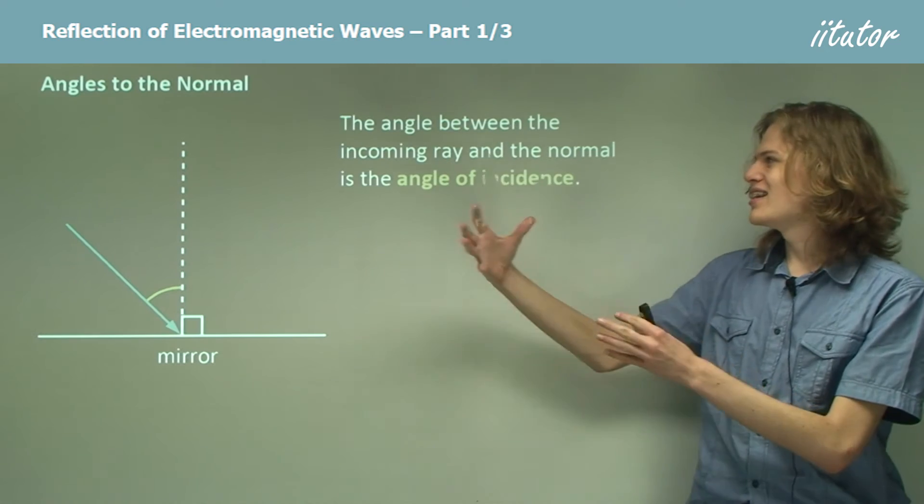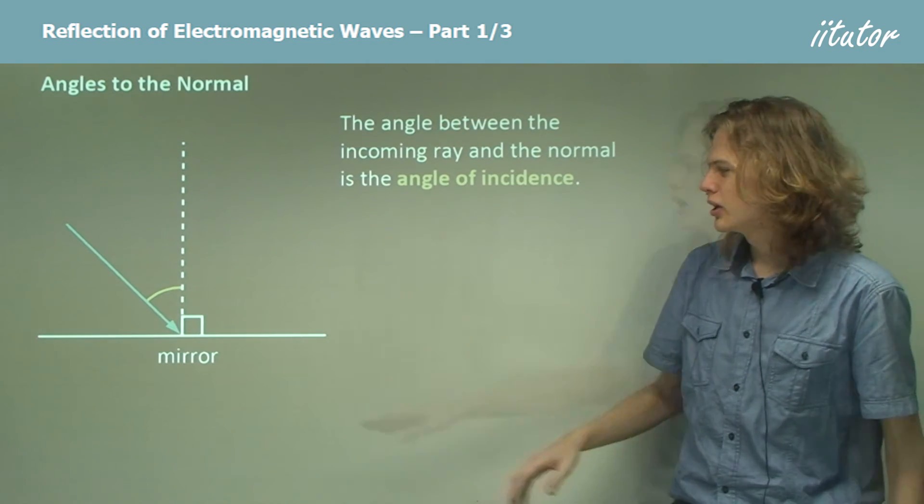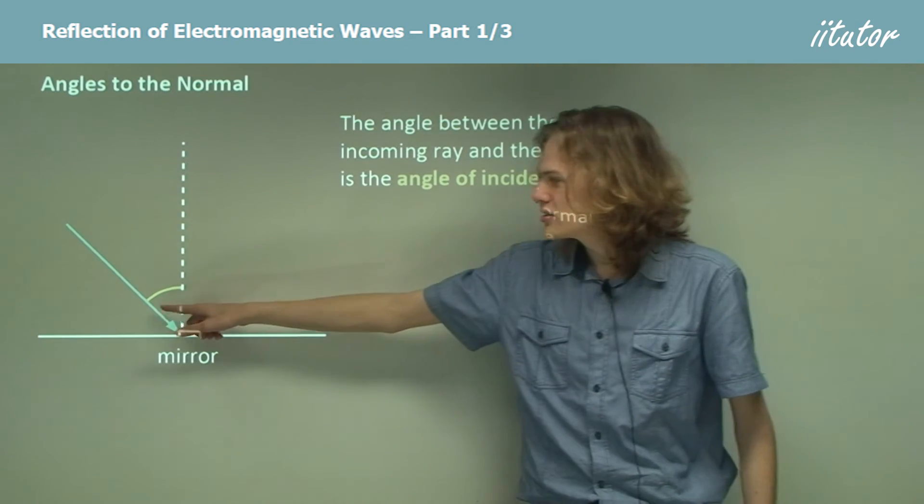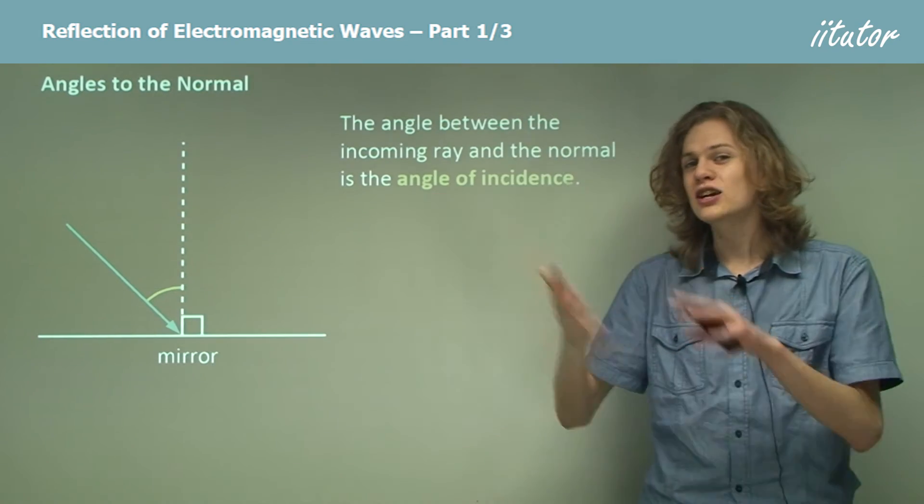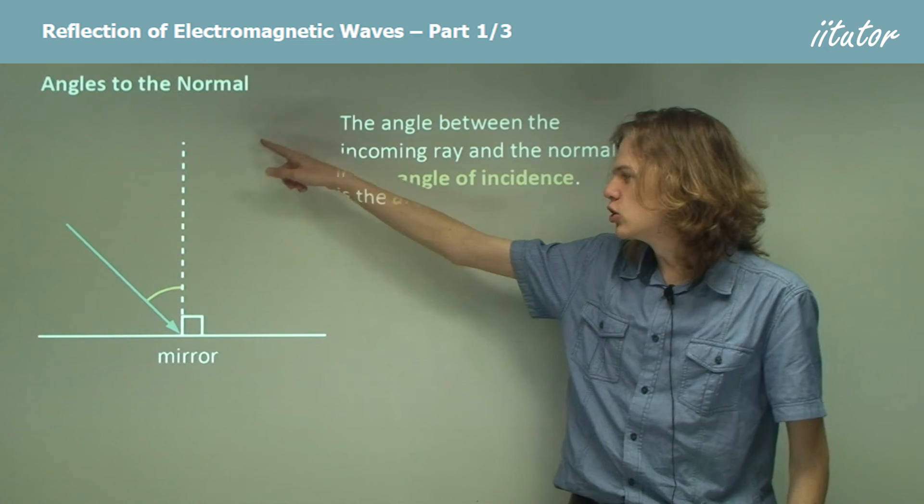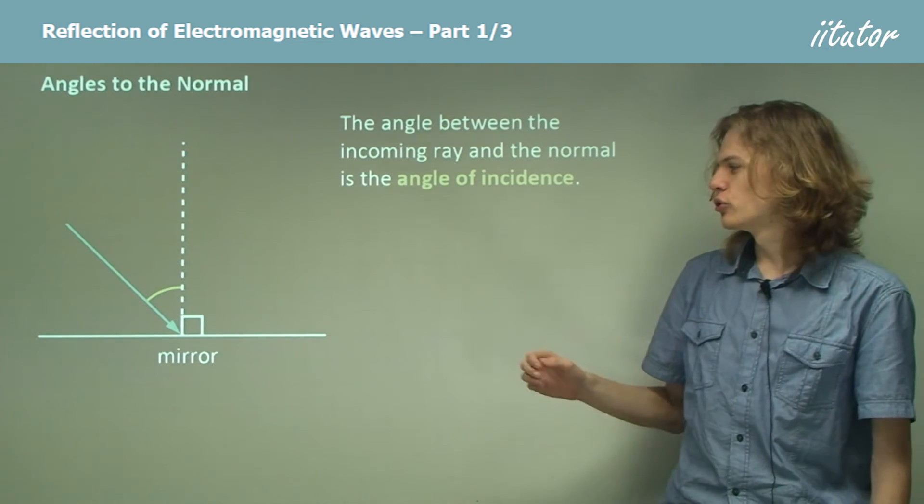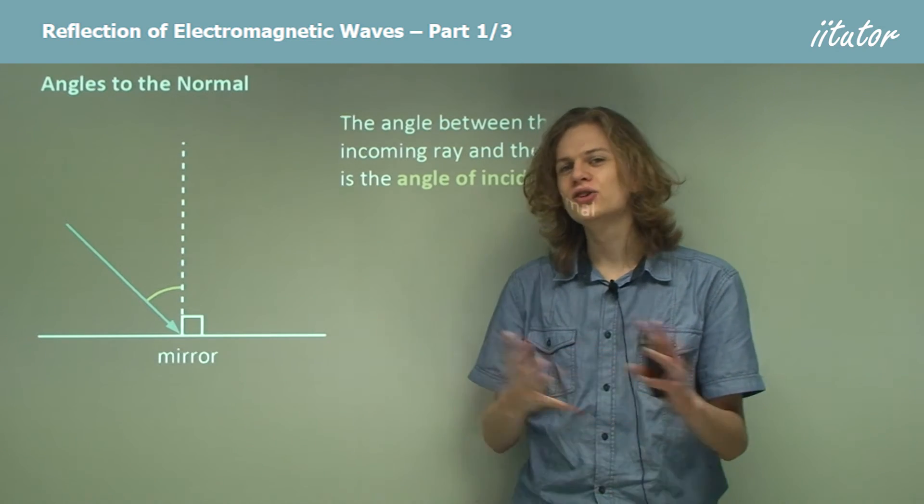So when we talk about an incoming wave coming to bounce off a mirror, or any surface between two media, then we say that this angle between the incoming ray and the normal is called the angle of incidence. We can also call this ray the incident ray.